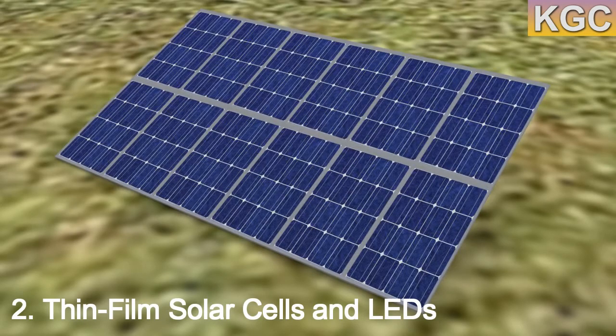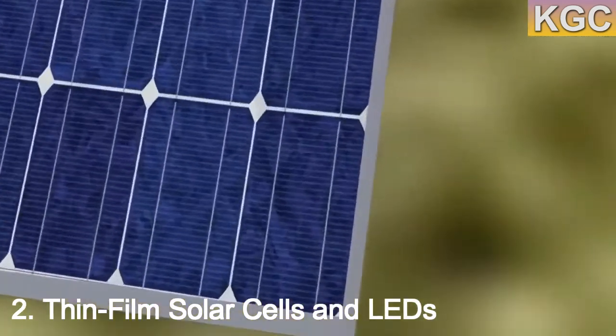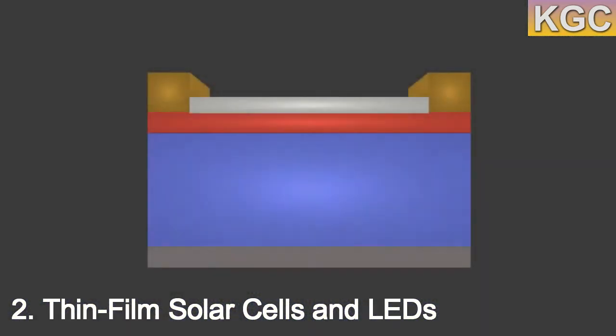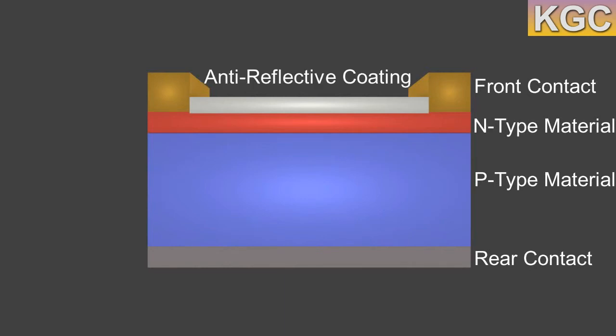2. Thin film solar cells and LEDs. Thin film devices such as perovskite solar cells or organic LEDs require thin conducting electrodes that transport electrical charge laterally to be extracted. Therefore, materials with low sheet resistances are required to reduce potential losses at this stage. This becomes even more important when attempting to scale up these devices, as the electrical charges will have to travel further along the electrodes before they can be extracted.